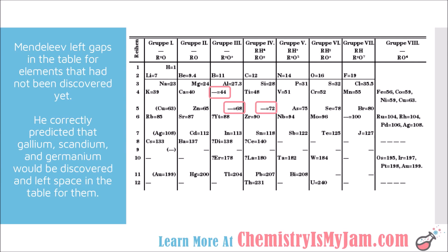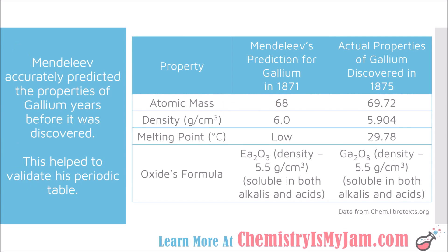He took this a step further and predicted the properties of those elements. Here you can see what Mendeleev predicted for gallium in 1871. Gallium was not discovered until 1875. Mendeleev predicted an atomic mass of 68 — the actual was 69.72. He predicted a density of 6.0 — the actual was 5.9. He predicted a low melting point — the actual is 29.78°C, not much above room temperature, so that is indeed a low melting point. Mendeleev also predicted how gallium would react with oxygen, saying there would be two of this element for every three oxygens, which is spot on.